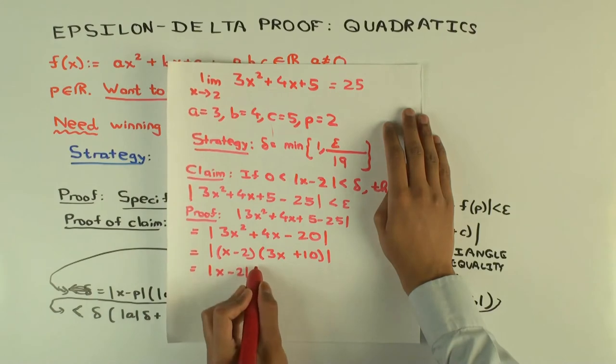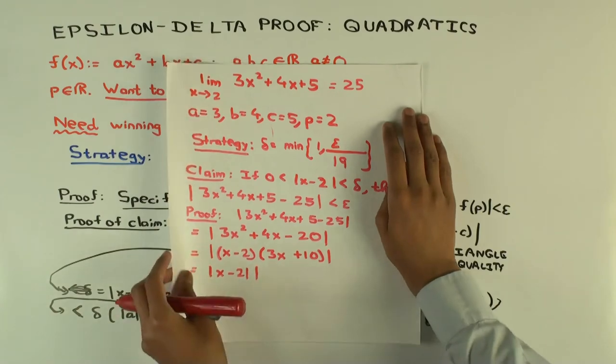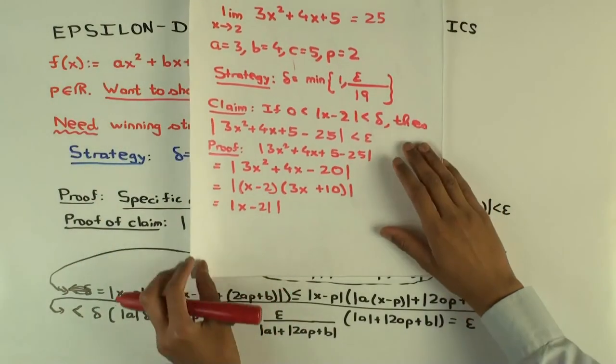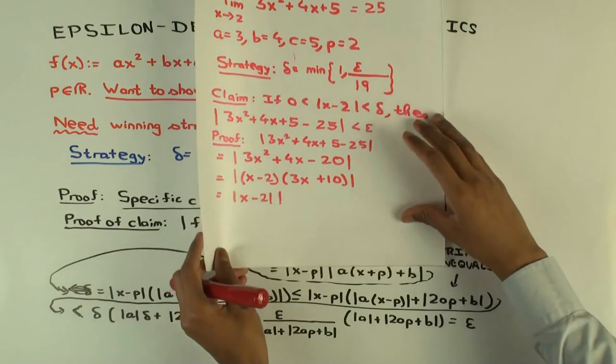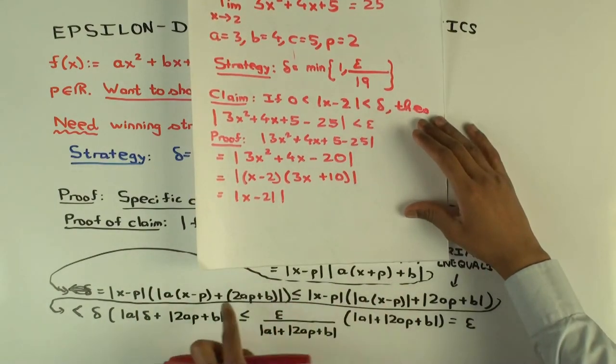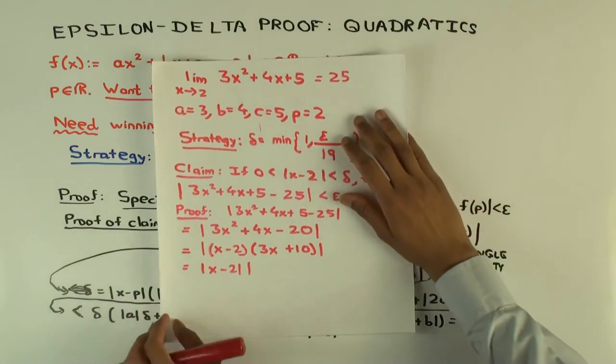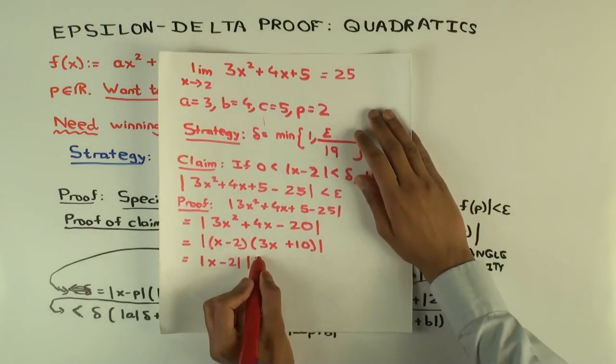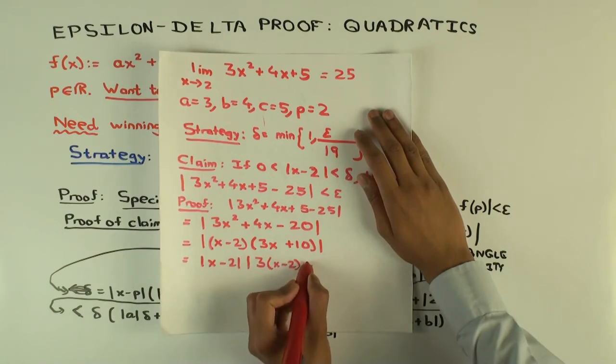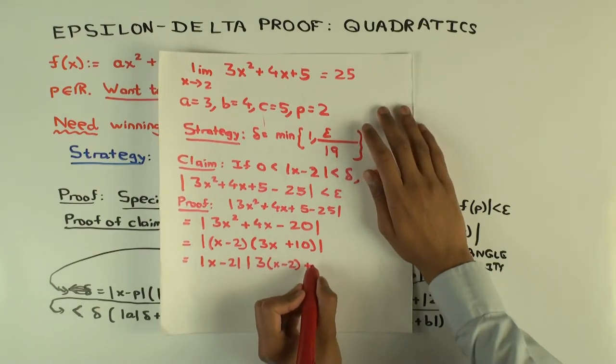Now the 3x plus 10, how do you rewrite it? You write it as 3 times x minus 2. That's what you do. So 3 times x minus 2, plus 16. Good.